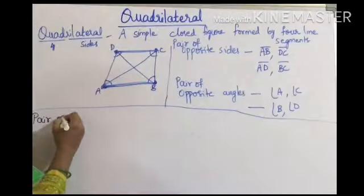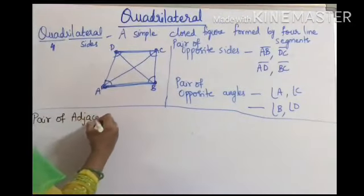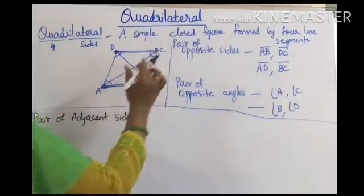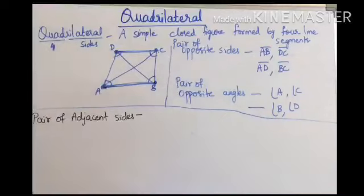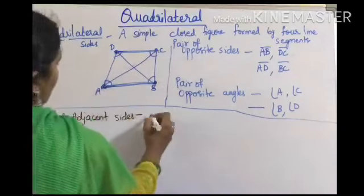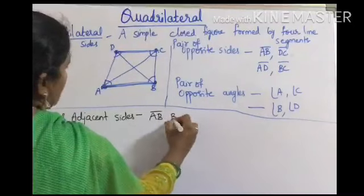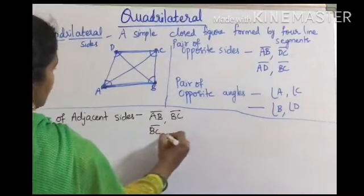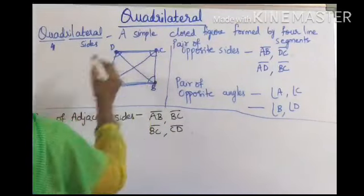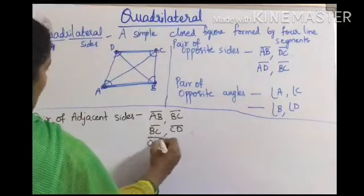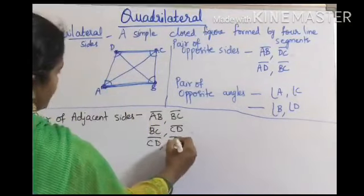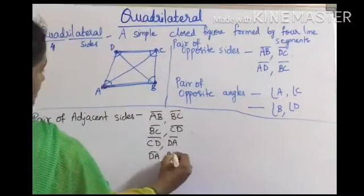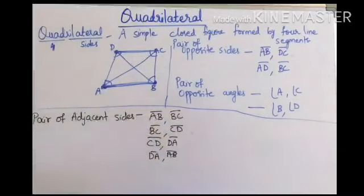Next, we are going to write pairs of adjacent sides. Adjacent means side by side. For opposite sides you get two pairs, but for adjacent sides you get four pairs. AB is adjacent to BC; BC is adjacent to CD; CD is adjacent to DA; and DA is adjacent to AB. So there are four pairs of adjacent sides.